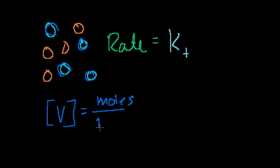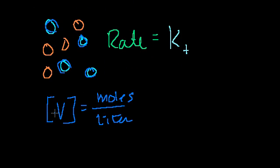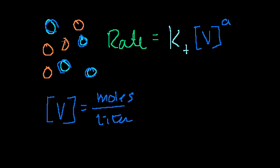When we write the concentration of molecule V, that's given in moles per liter. Moles is just a number, so concentration tells us roughly how many molecules you'd expect to find in any given volume. If I want the probability of finding A of these molecules — because that's how many I need — I multiply the concentration by itself A times. It's like asking: what's the probability of five heads? You multiply the probability of one head five times. So the forward reaction requires concentration of V to the A power, and also B of the X molecules, giving concentration of X to the B power.